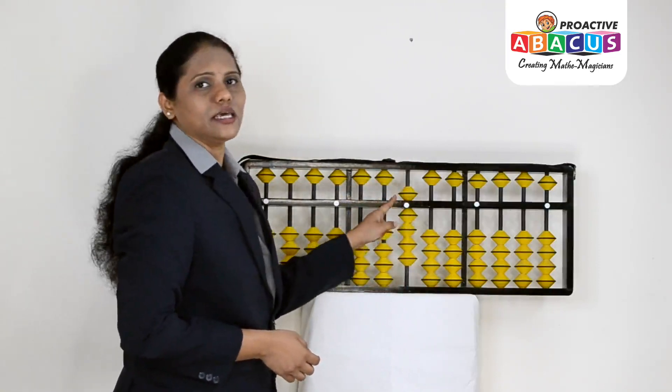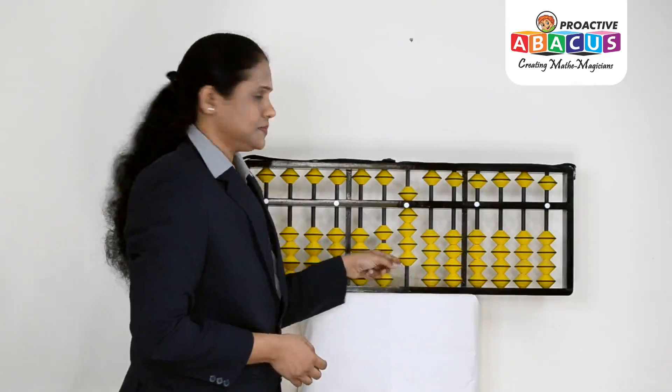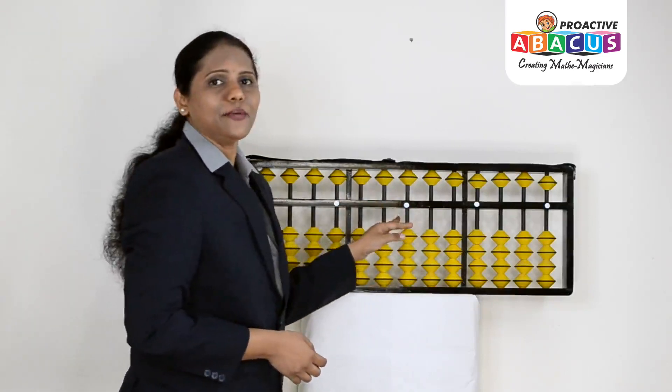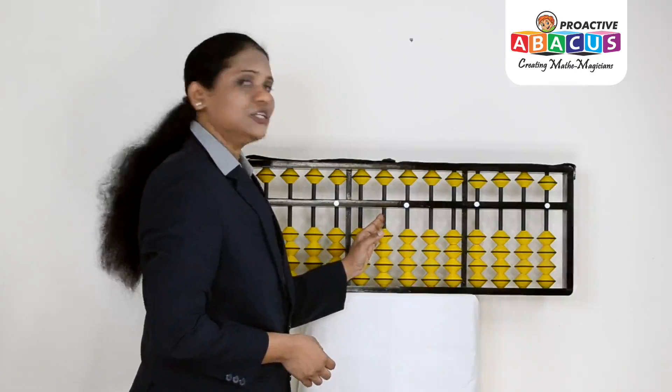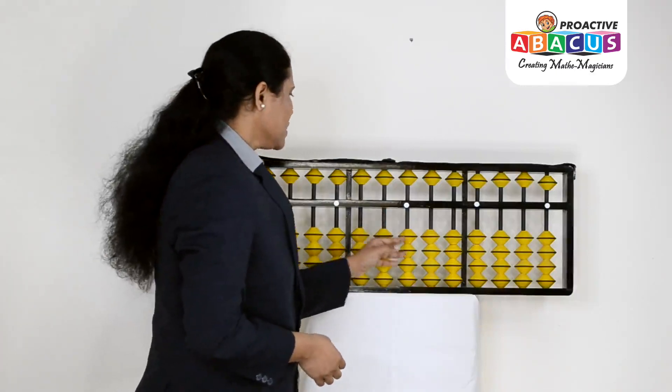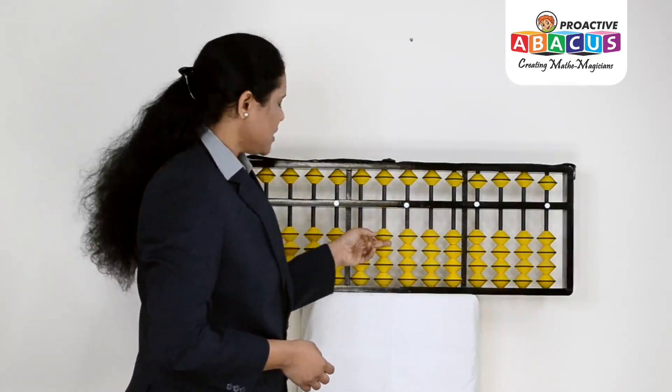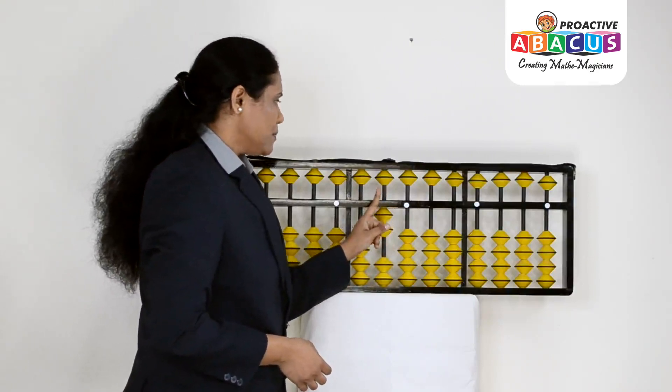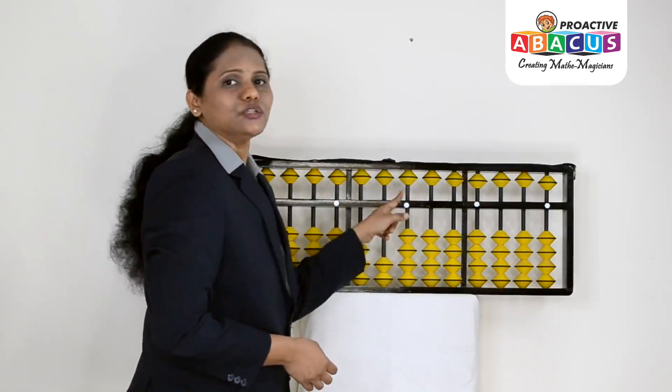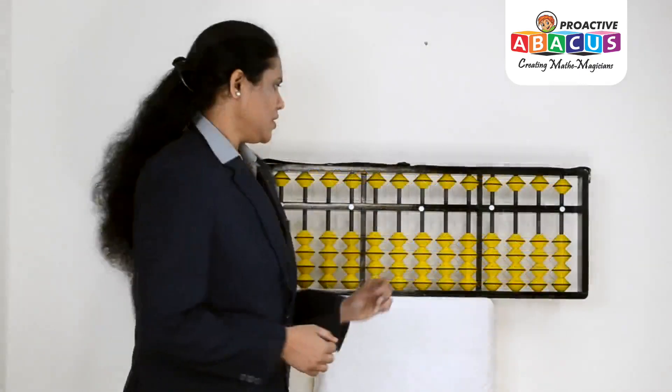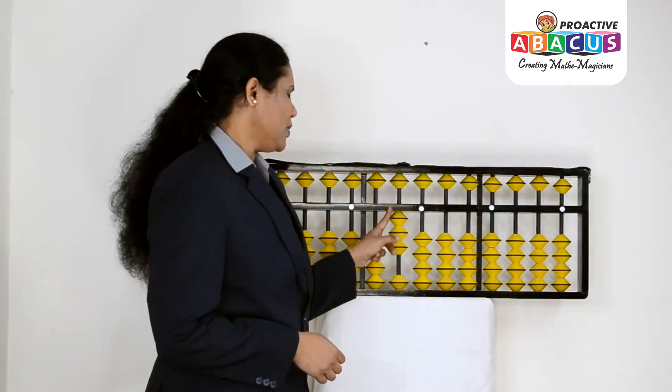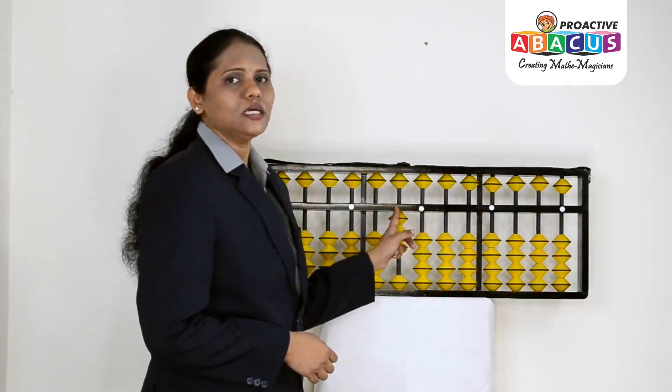Now we have tens and unit place. We have 10: 1 in tens place and 0 in unit place. We have 20: 2 beads in tens place and 0 in unit place. We have 30: 3 beads in tens place and unit place is zero, that's 30.